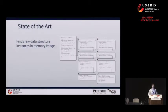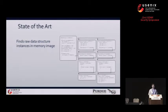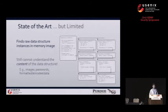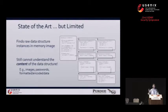The state of the art in memory forensics is really good at uncovering and returning to investigators raw data structure instances that are within a memory image. Believe it or not, this is that PDF we were just looking at in raw data structure form. You can see the problem. Investigators still face non-trivial manual effort to understand the content of these data structures, such as what this PDF actually looks like. And that's even if decoding this data structure is possible for human investigators at all.